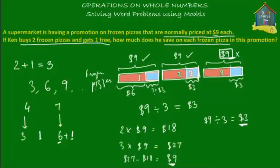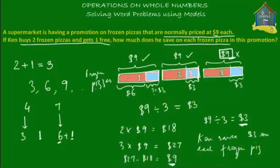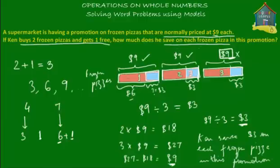So $3 is how much he saved on each of the frozen pizzas in this promotion. Ken saves $3 on each frozen pizza in this promotion. If you were asked how much he paid for each pizza, the answer would be $6. But since the question asks how much he saved on each frozen pizza, the answer is $3.